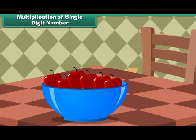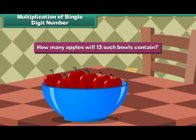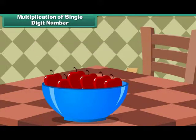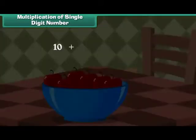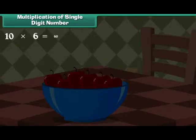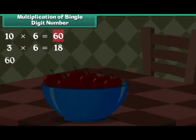1 fruit bowl contains 6 apples. How many apples will 13 such bowls contain? We must multiply 13 and 6 to find the answer. Write 13 as 10 plus 3. Multiply 10 and 6. Then multiply 3 and 6. Sum the results up. 10 multiplied by 6 is equal to 60. 3 multiplied by 6 is equal to 18. 60 plus 18 is equal to 78. 13 bowls will contain 78 fruits.